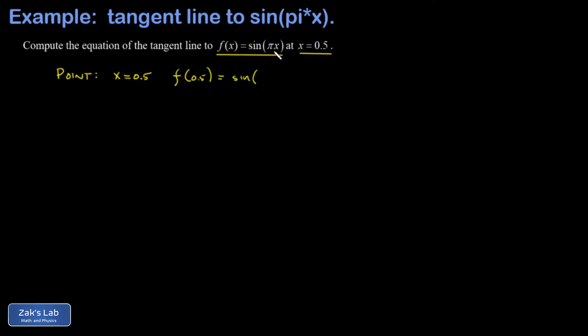That's the sine of 0.5 pi or the sine of pi over 2, and that's 1. So the point where the tangent line touches is 0.5, 1.